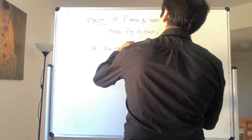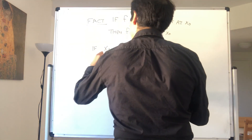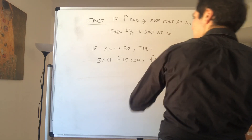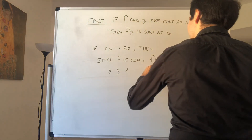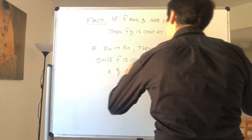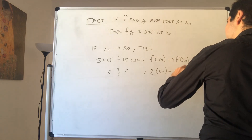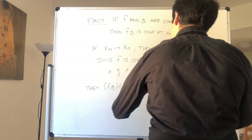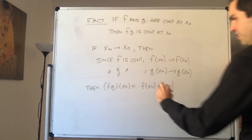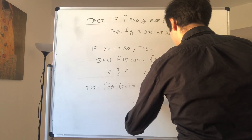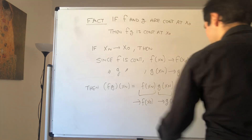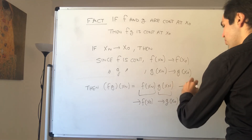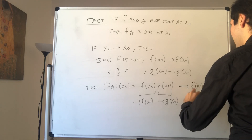If xn converges to x₀, then since f is continuous, we know that f(xn) converges to f(x₀), and since g is continuous, we know that g(xn) converges to g(x₀). But then, what is fg(xn)? That is f(xn) times g(xn). This goes to f(x₀) and this goes to g(x₀), so by the fact that the limit of products of sequences is the product of the limits, this goes to f(x₀)·g(x₀), which is fg(x₀).